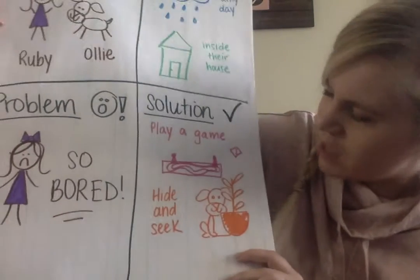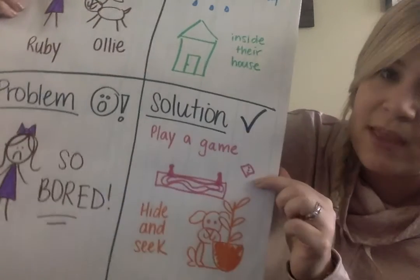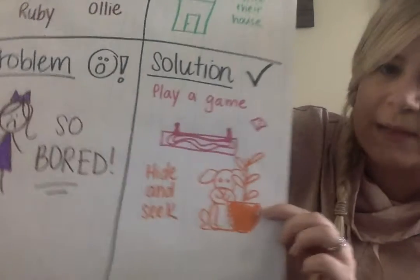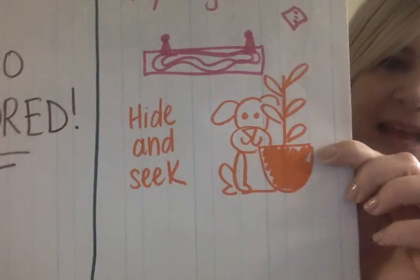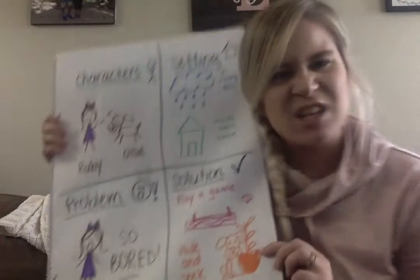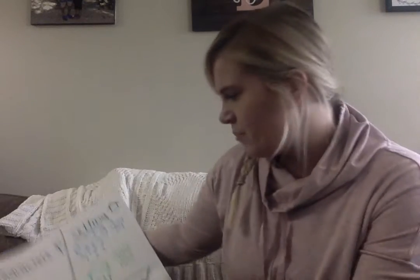I thought of two ways I might try to solve my problem: maybe they will play a game, or maybe they'll play hide-and-seek. I drew Ollie hiding behind a plant, but I'm not sure — maybe you guys could suggest some more ways that I could solve my problem.